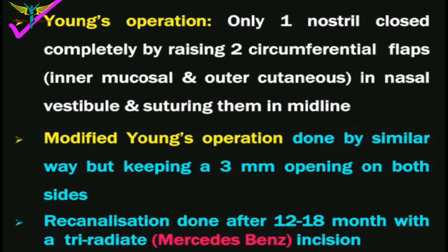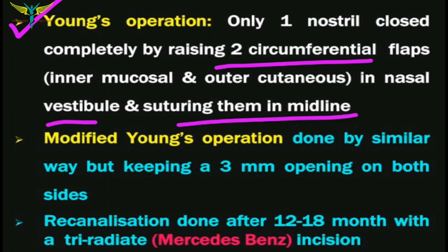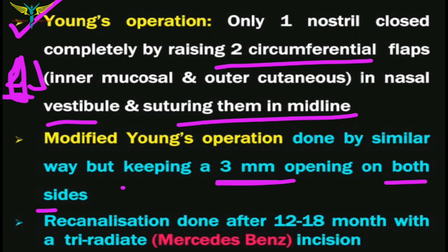Surgical treatment includes Young's operation, in which one nostril is completely closed by raising two round flaps from the inner mucosal and outer cutaneous layers in the nasal vestibule, sutured in the midline. In the modified Young's operation, both nostrils are closed but a 3 mm opening is left in each. Both operations are performed for six months duration, after which the flaps are opened and reversal of the normal nasal cavity and reduction of crust formation can be noted.